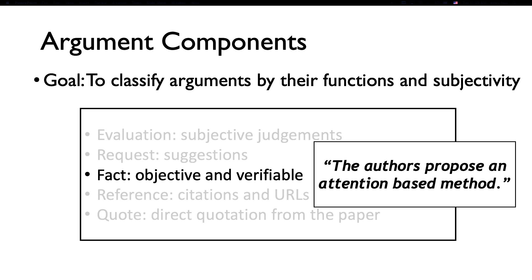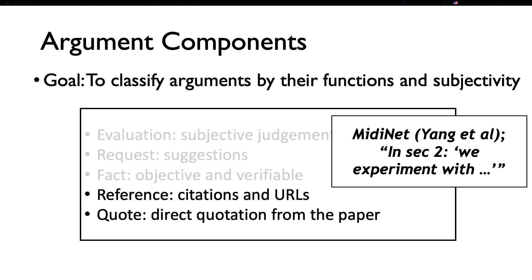A third type is defined as fact, which are objective information that can be found in the paper, such as the type of work the author proposed. And lastly, we consider two other objective types. Reference are citations and URL links to some external resource, and quote are direct quotations from the paper. So these two types can also be used to prove the point of the reviewer.